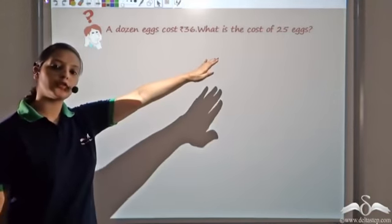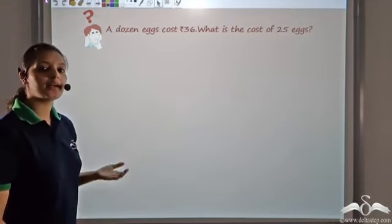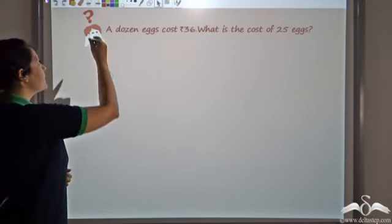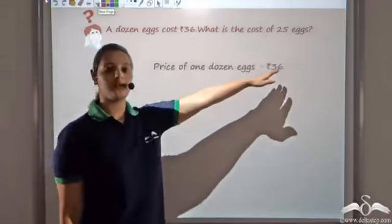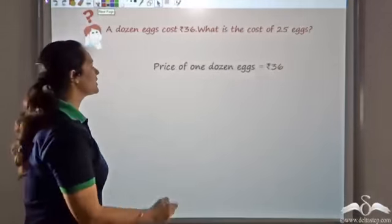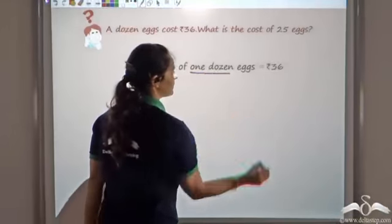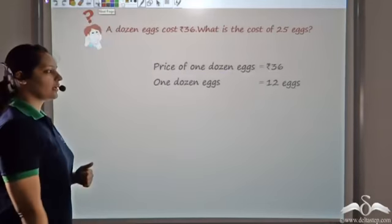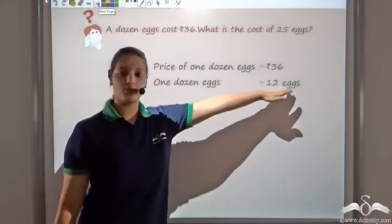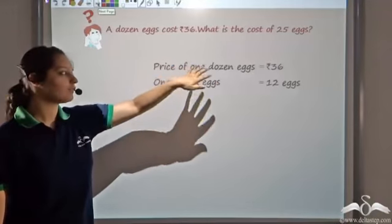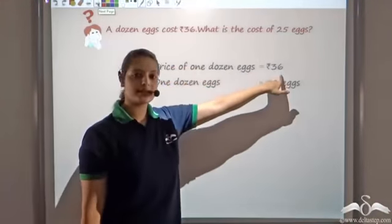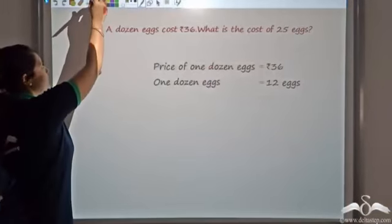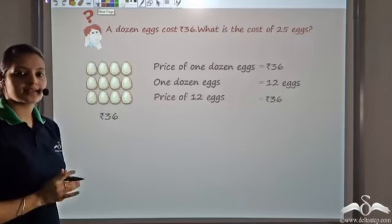Can you tell me what would be the cost of 25 eggs if you know that a dozen eggs cost 36 rupees? Let's see. We know that a dozen eggs cost 36 rupees. Now, one dozen means 12 eggs. So price of 12 eggs is 36 rupees. This is what is given to us.